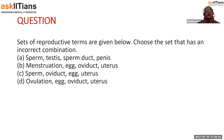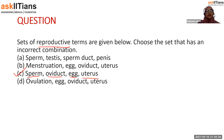The next question asks which set of reproductive terms has an incorrect combination. The options include sets pairing sperm, testes, and penis; menstruation, egg, oviduct, and uterus; sperm, oviduct, egg, and uterus; and ovulation, egg, oviduct, and uterus. The correct answer is C, because sperm reaches the oviduct where it meets the egg, fertilization takes place, and finally the fertilized egg is implanted into the uterus — so option C is the one that makes sense as the correct sequence.